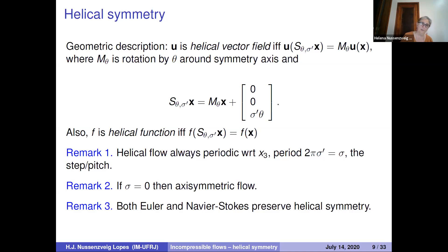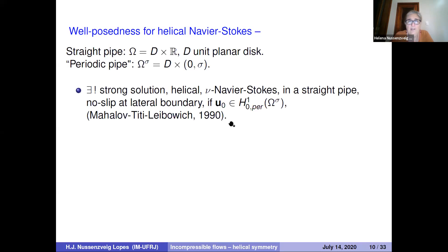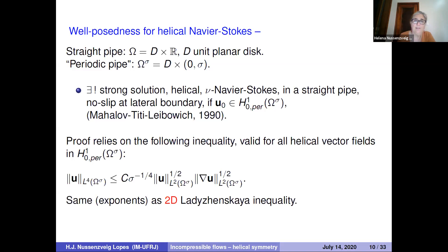For Navier-Stokes in a straight pipe, there exists a unique strong helical solution with no-slip boundary conditions if the initial data is H^1_0 and periodic in the x_3 direction. This was proved by Mohalov, Titi, and Leibovich in 1990. Their proof relies on a Ladyzhenskaya-type inequality with the same exponents one-half and one-half as in two dimensions — one indication that this problem is closer to being two-dimensional.